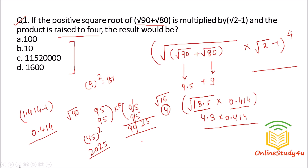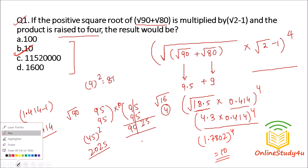So our answer will be approximately 10. To the power 4, 1.7802 comes around 10, so my answer will be option B. Friends, this is how you smartly solve the problem in the examination. The problems are not difficult; you just need to take care and work carefully.